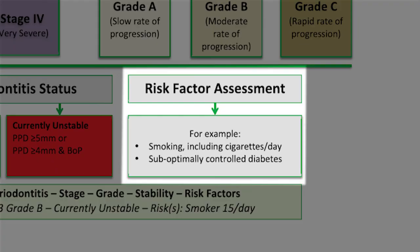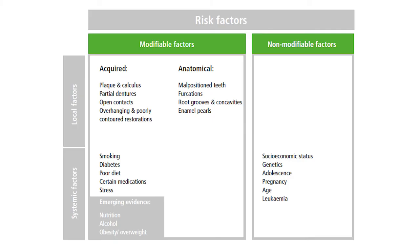Because if someone went from having 8mm pockets down to 5mm pockets, that's an amazing improvement. Even if it stays at 5mm for the rest of their life, they will still classify that as unstable. Risk factors include things like smoking and diabetes, but you can pause here for a full list taken from the BSP guidelines.